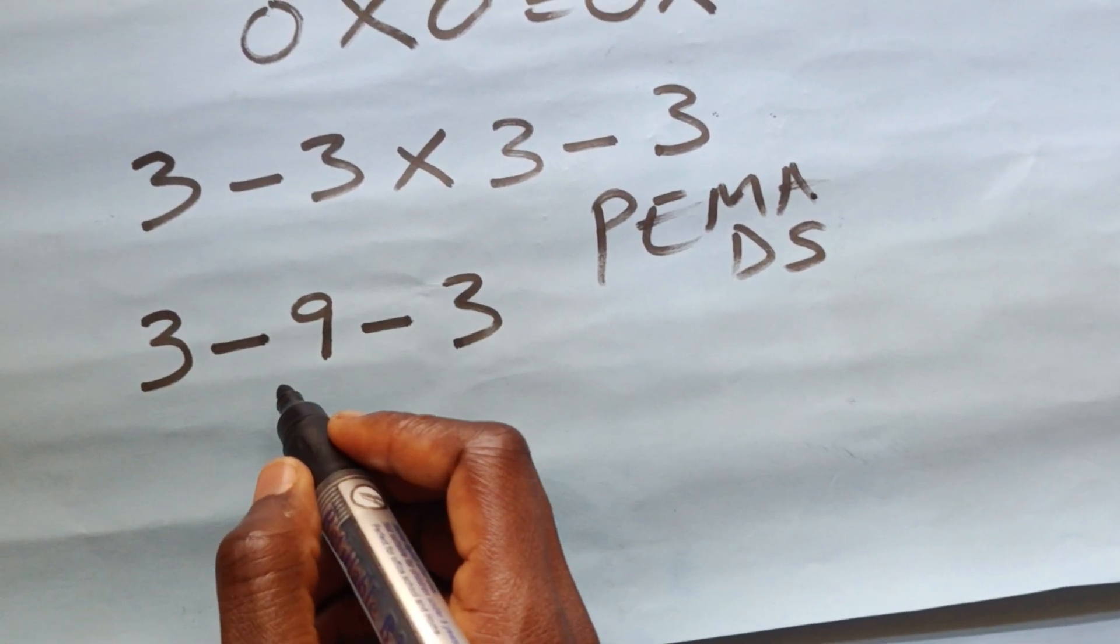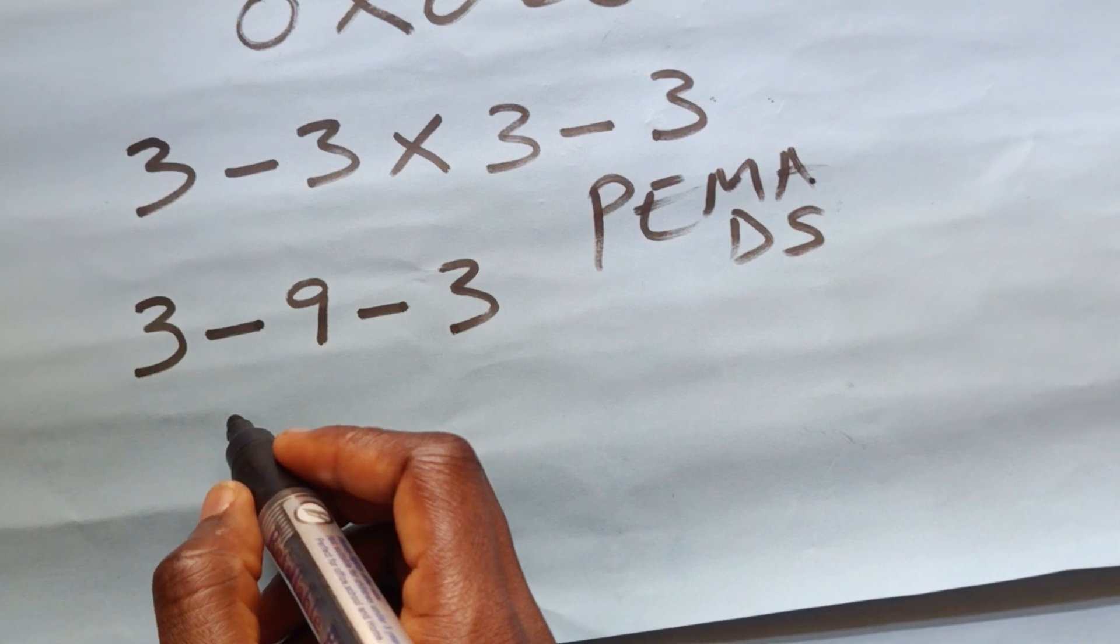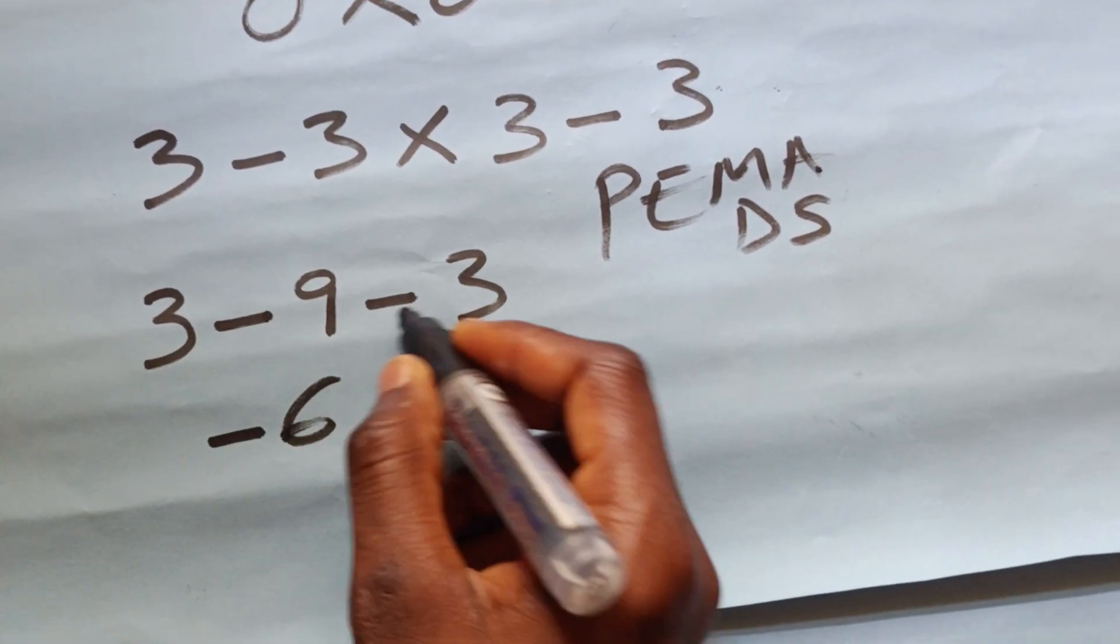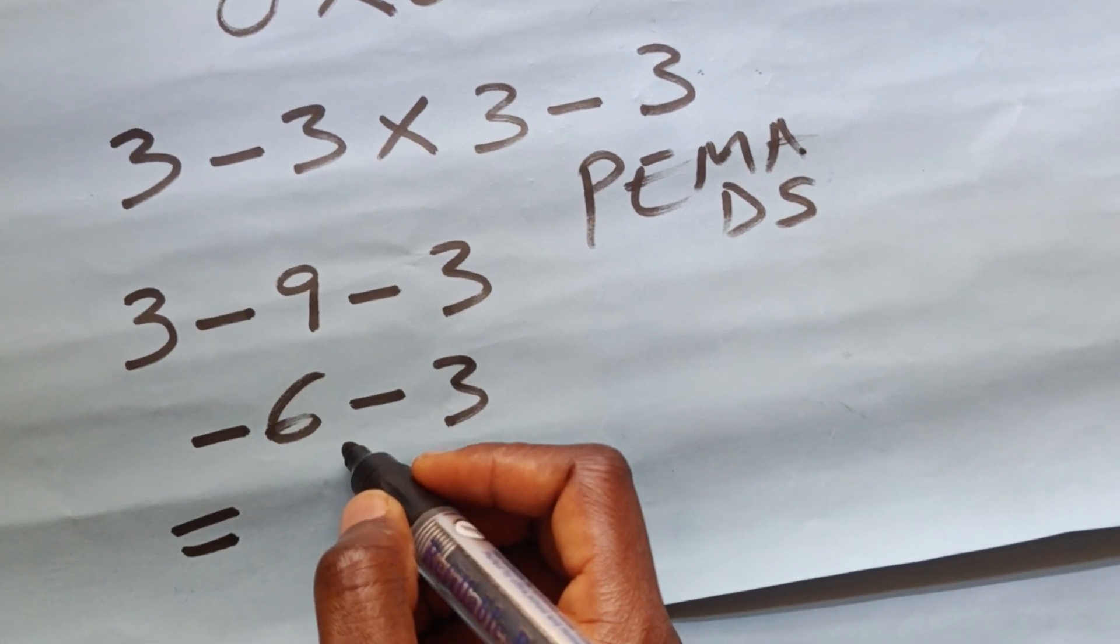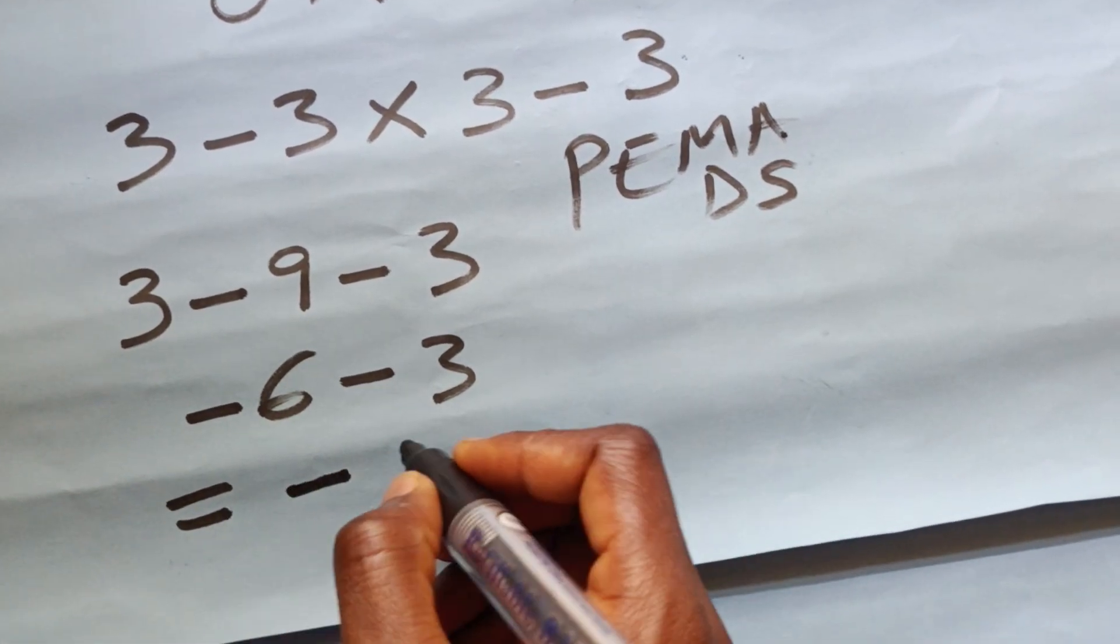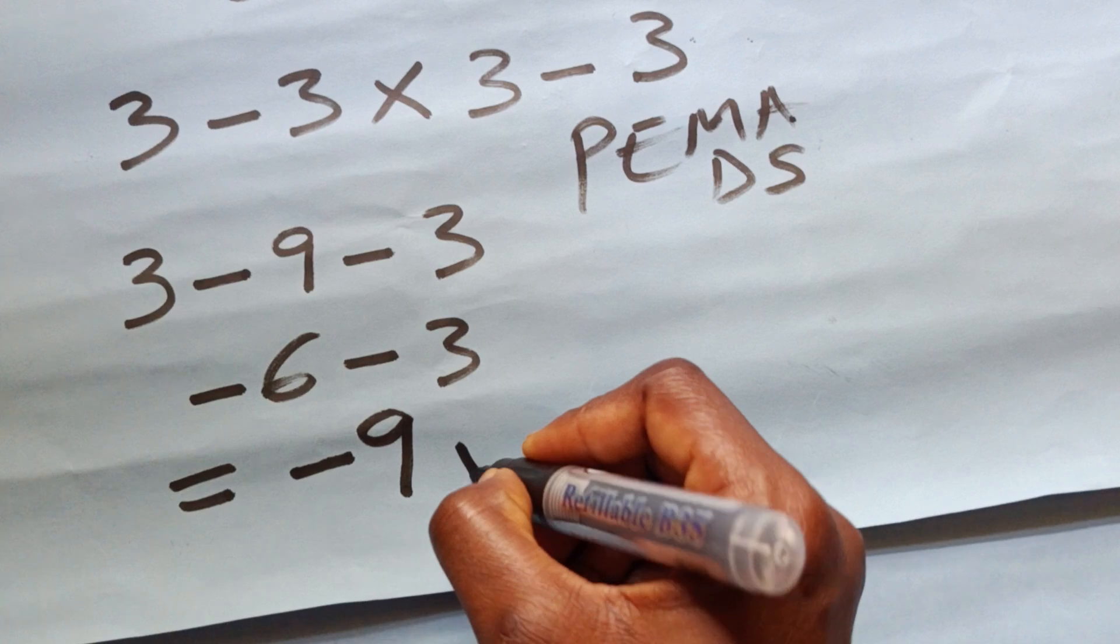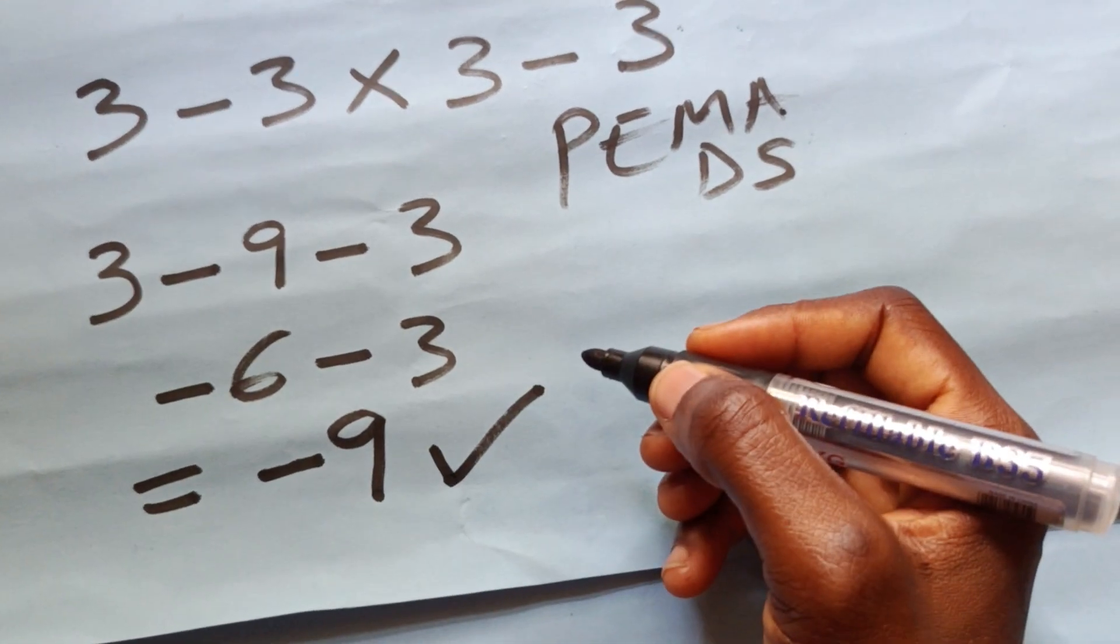3 minus 9 will give us minus 6, then minus 3. Minus 6 minus 3 will give us minus 9. This is our final answer. Thank you.